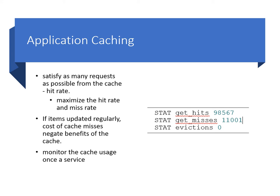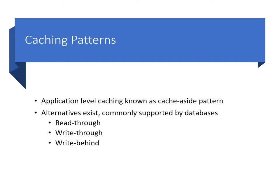Application caching can provide significant throughput boosts, reduced latencies, and increased client responsiveness. The key to achieving these desirable qualities is to satisfy as many requests as possible from the cache. Application-level caching is also known as the cache aside pattern. The name references the fact that the application code effectively bypasses the data storage system if the required results are available in the cache.